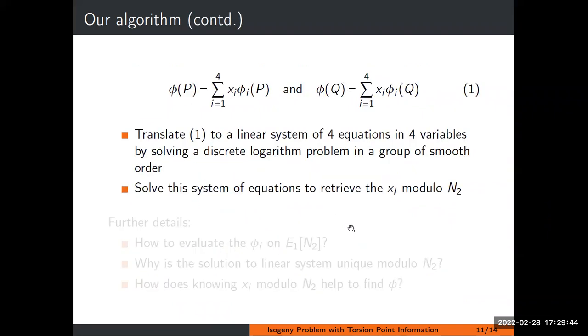We know we can evaluate φ on the N2 torsion, so we know what φP is. We evaluate both sides of this equation. So now we have four equations and four variables. But the system is not linear. However, it can be turned into a linear system by using pairings and solving discrete logarithms. Solving discrete logarithms in this context is not hard because usually N2 is smooth. But if not, you can invoke a quantum algorithm for solving discrete logarithms. So you have a system of four equations, four variables, modulo N2, and you can retrieve the xi modulo N2.